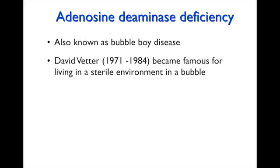ADA deficiency came to the fore around 1971–1984 when David Vetter became famous because he had to live in a bubble in a sterile environment. This ADA deficiency made him very susceptible to the slightest infection, and he actually did die of an infection.